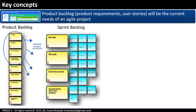In the agile lifecycle, product scope is documented in the form of a product backlog — a list of high-level requirements or characteristics of a product. The top-ranked items from the product backlog are selected for a sprint and added to the sprint backlog during the sprint planning session. These requirements are further elaborated in the form of user stories. We will talk about product backlog and sprint backlog in more detail in another session.